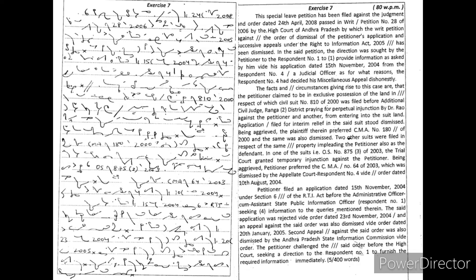The said application was rejected wide order dated 23rd November 2004 and an appeal against the said order was also dismissed wide order dated 20th January 2005. Second appeal against the said order was also dismissed by the Andhra Pradesh State Information Commission wide order. The petitioner challenged the said order before the High Court seeking a direction to the Respondent No. 1 to furnish the required information immediately.